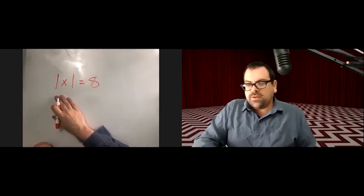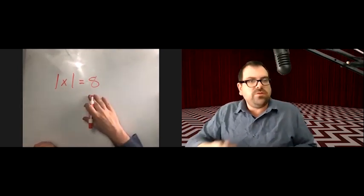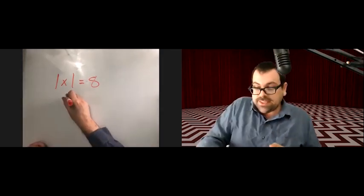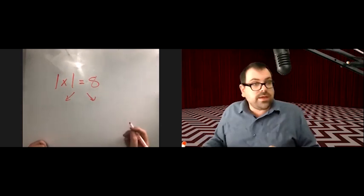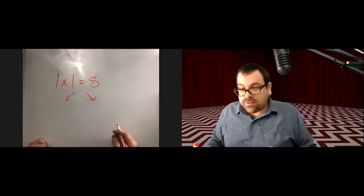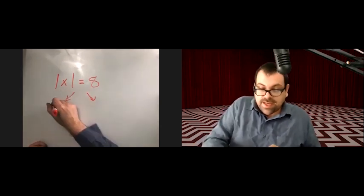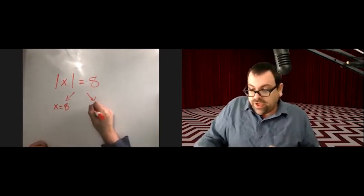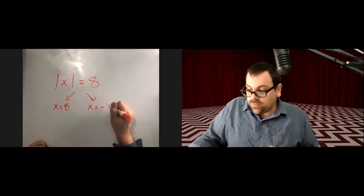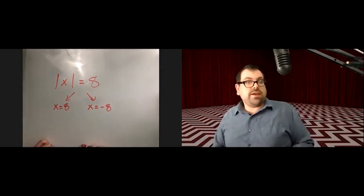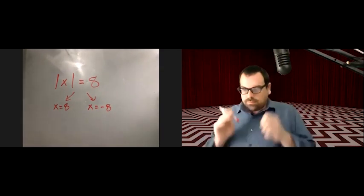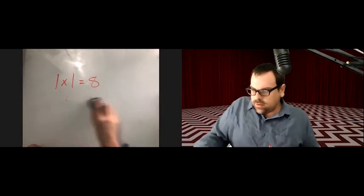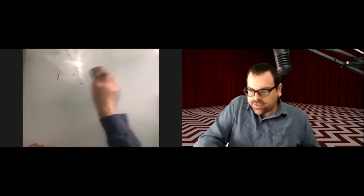For example, if the absolute value of x equals 8, we split it into two equations: x equals positive 8, or x equals negative 8. Not so bad.